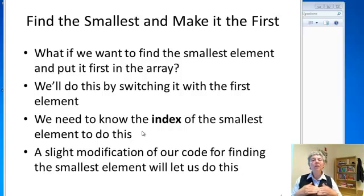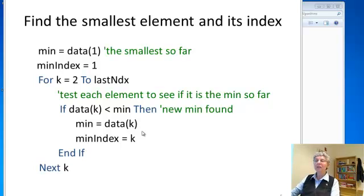Now in order to do sorting, we not only have to find elements, we have to move them. So what we want to do is find the smallest element and make it the first element. To do this, we have to know what is the index of the smallest element as well as the value. So, to do that, we'll make a slight modification to the code, and along with keeping track of what the value of the smallest element is, we'll also keep track of its index.